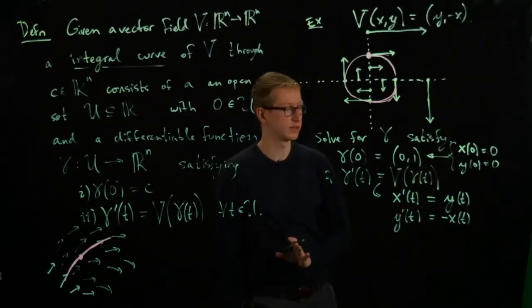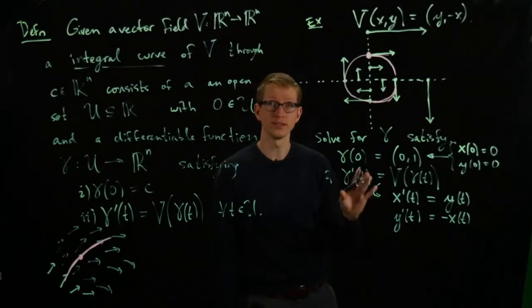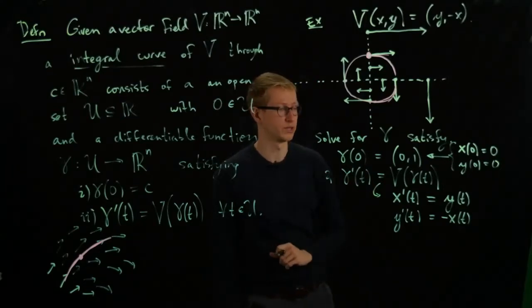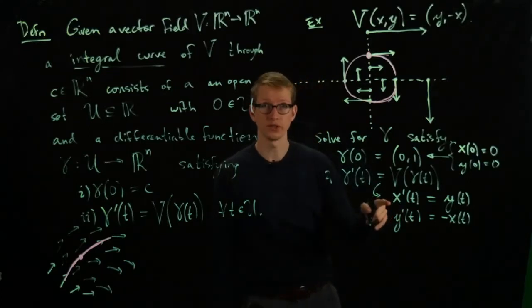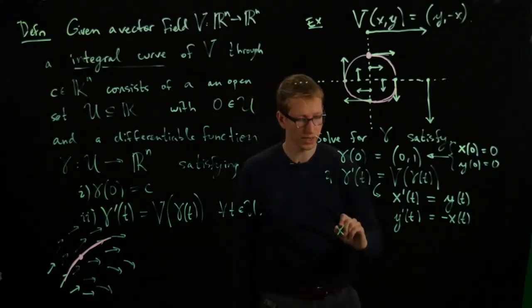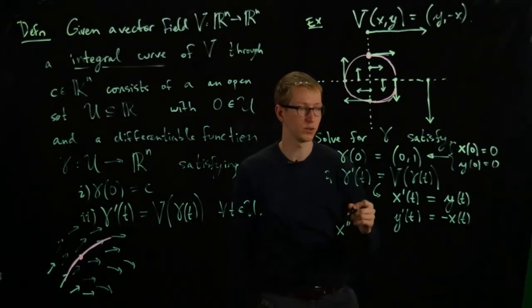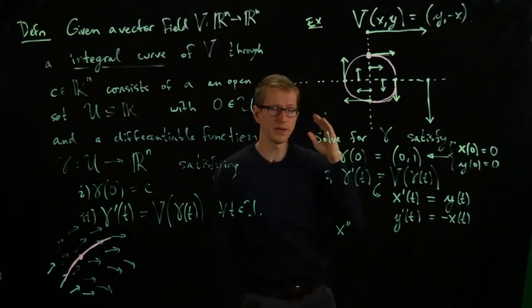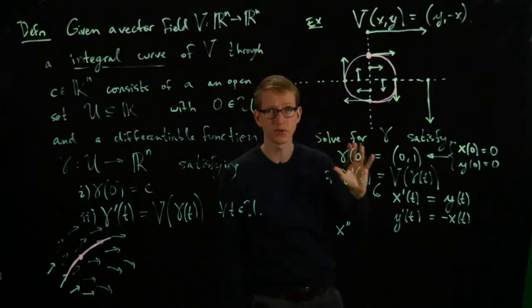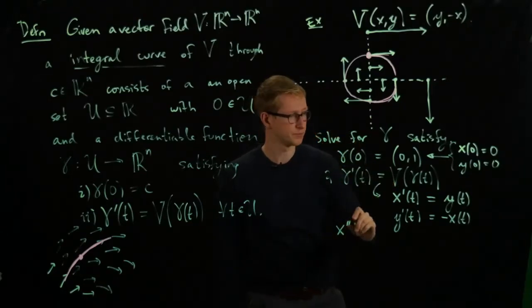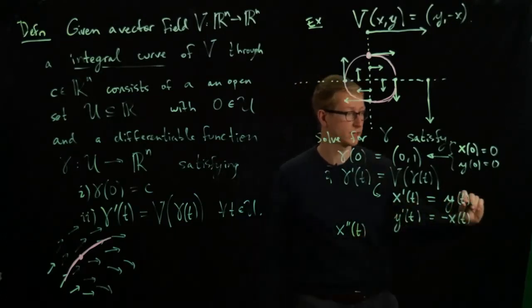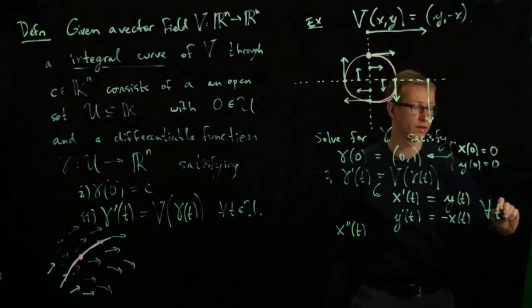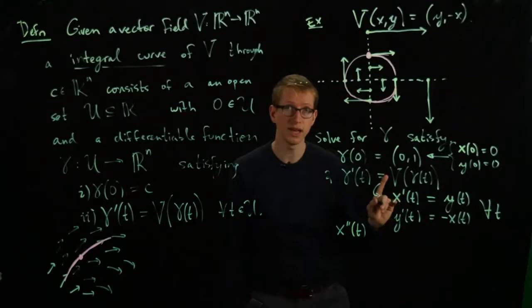So we want to solve for two functions, functions of the variable t, function x and the function y, that satisfy these four conditions. One way of solving this system is by turning it into a second-order differential equation. And what I mean by that is, if we take, for instance, the first function, and we take its derivative again, so in this case, what we're doing, mathematically speaking, is now we're assuming that our function is twice differentiable. For the purposes of this calculation, so we have x''(t), and this has to be true for all t, by the way, in some domain, which we still have to figure out.